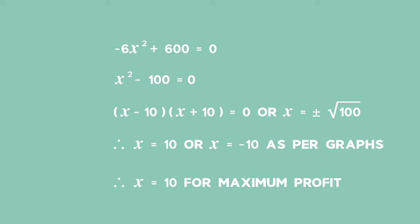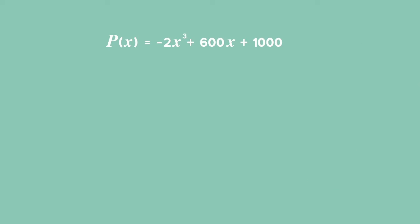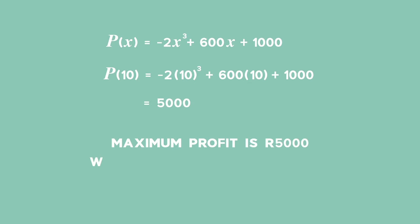Now, all we have to do is substitute x = 10 back into the formula for P(x) to find the maximum profit. Maximum profit is 5,000 rand when there are 10 employees.